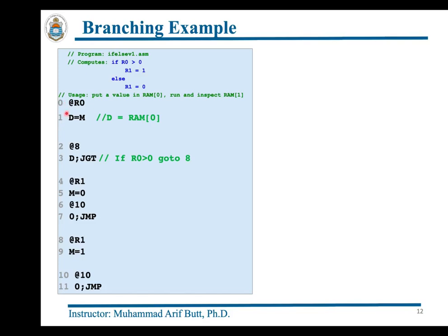The instructions at addresses 0 and 1 read memory from address 0 and temporarily store the value in the D register. The instructions at addresses 2 and 3 form a conditional goto: if the D register's contents are greater than 0, execution jumps to ROM address 8. The instruction at ROM address 8 writes a 1 at RAM address 1, after which the program enters the termination loop at addresses 10 and 11.